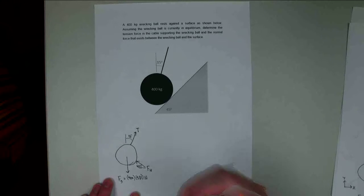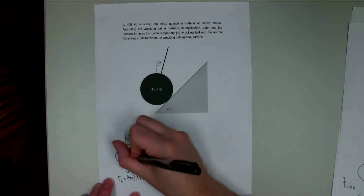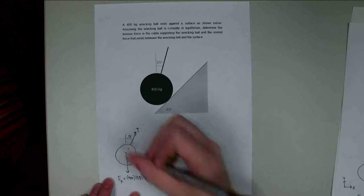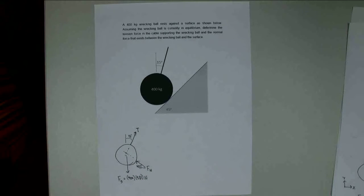So all three of these, this is a concurrent force system. They all have lines of action that go through the center point here. So we're going to treat this like a particle. We're going to have two equilibrium equations: sum of forces in the x and sum of forces in the y.